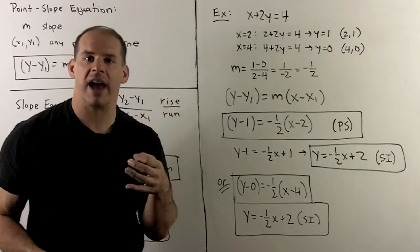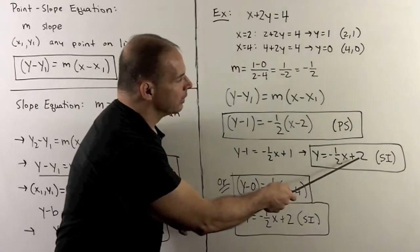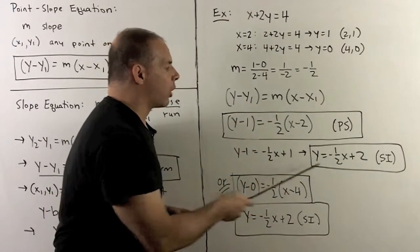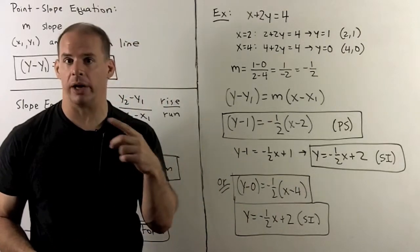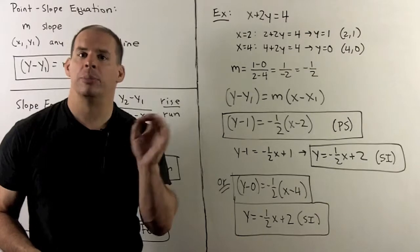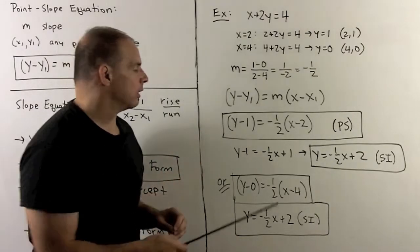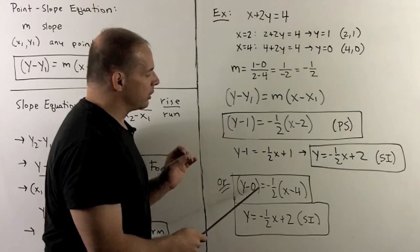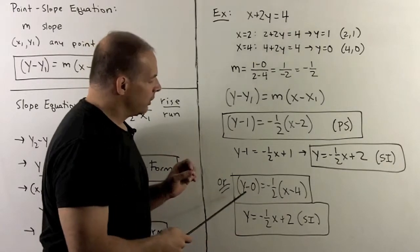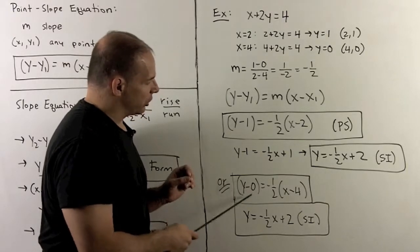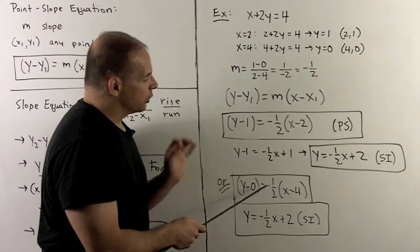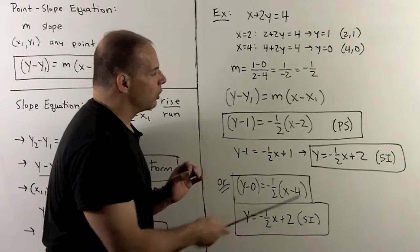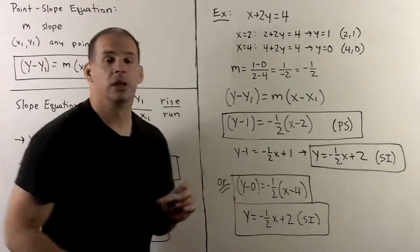We already knew the slope was minus one-half, and now we know the y-intercept is the point (0, 2). To check our work, we expect the same answer using the other point. So with x1 equals 4 and y1 equals 0, we have y minus 0 equals minus one-half times the quantity x minus 4. Expanding the right side gives minus one-half x plus 2, and the slope-intercept form agrees with what we got from the other point-slope equation. That checks our work.